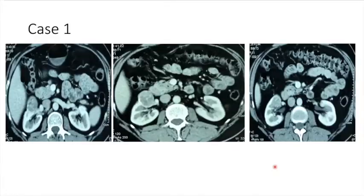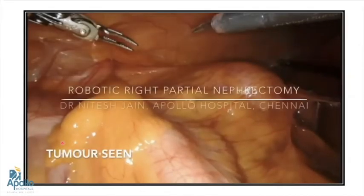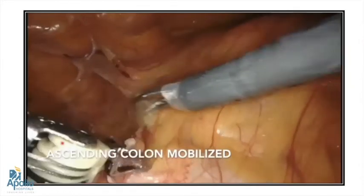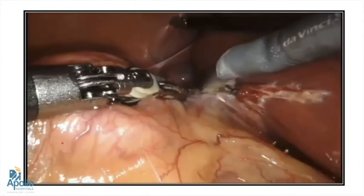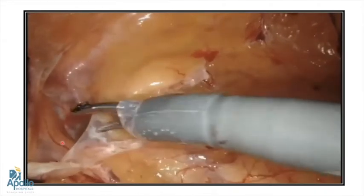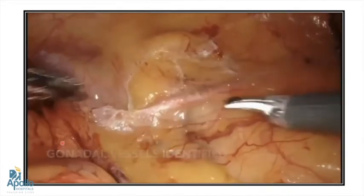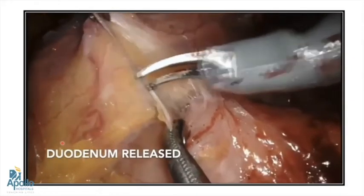Case number one is a complex partial where the tumor is located on the anterior hilar lip. These are hilar tumors lying very close to the anterior hilar lip. Surgery starts with colon mobilization, using blunt and sharp dissection with good traction to identify the right plane. The duodenum needs to be kocherized medially.